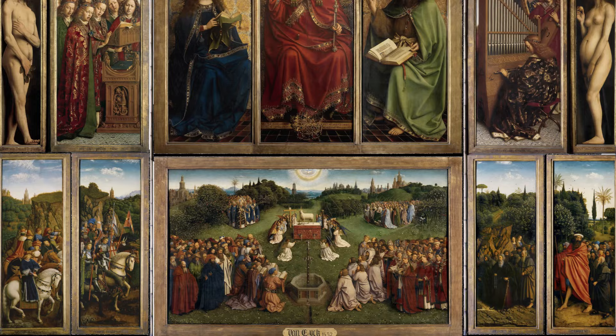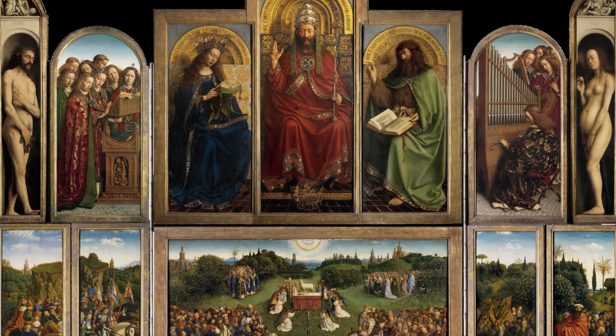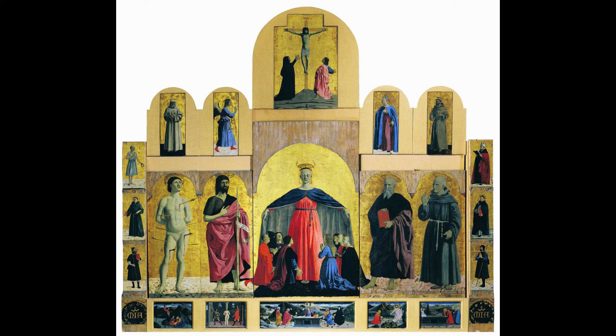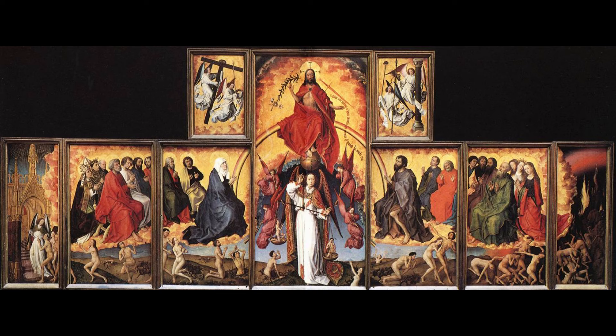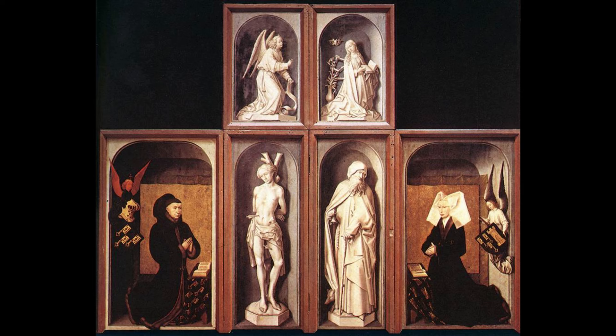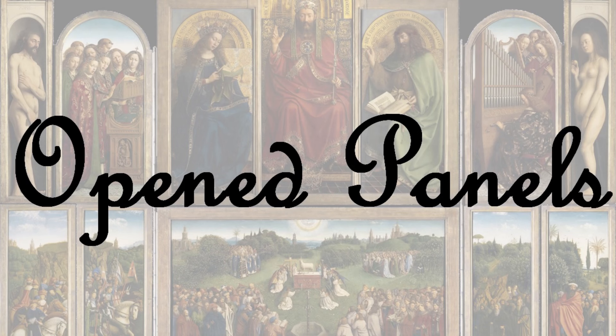Before diving into the details, these kinds of devotional polyptychs were relatively popular during the 14th and 15th centuries, although not too many were made because of their large size and costs. Here is, for example, the Beaune Altarpiece from around 1450 by Rogier van der Weyden. When the doors are opened, it shows scenes related to the Last Judgement, and when closed, it follows a similar format as the Ghent Altarpiece, which was painted two decades earlier.